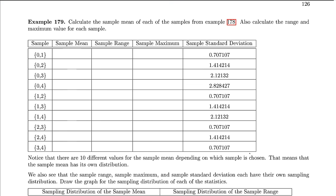Let's see how it actually would change. On the next page, I've written down all the possible samples, and we can calculate the mean, the range, and the maximum. To find the mean, you add the values together and divide by 2. So my first values are 0.5, 1, 1.5, 2, 1.5, 2, 2.5, 2.5, 3, and 3.5 — just adding them together and dividing by 2 for each.